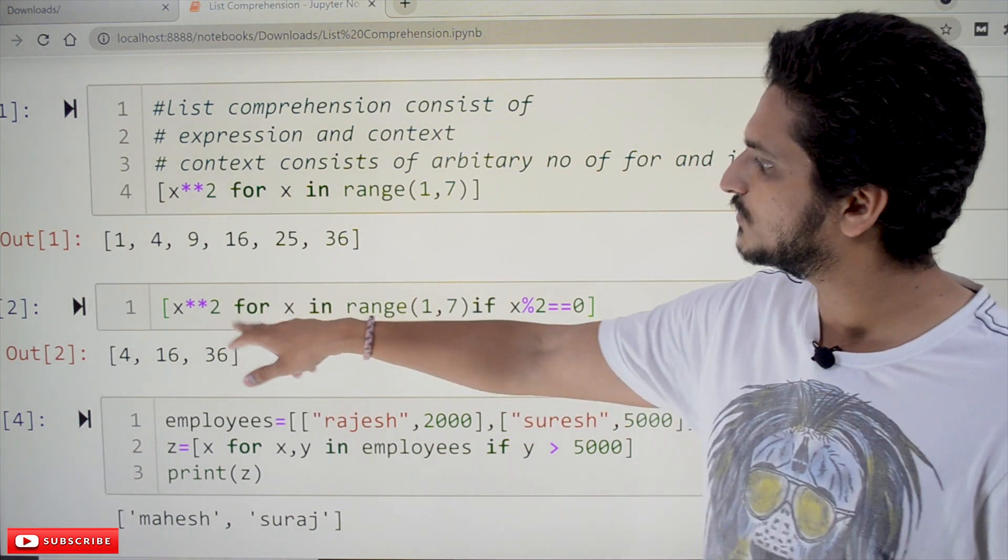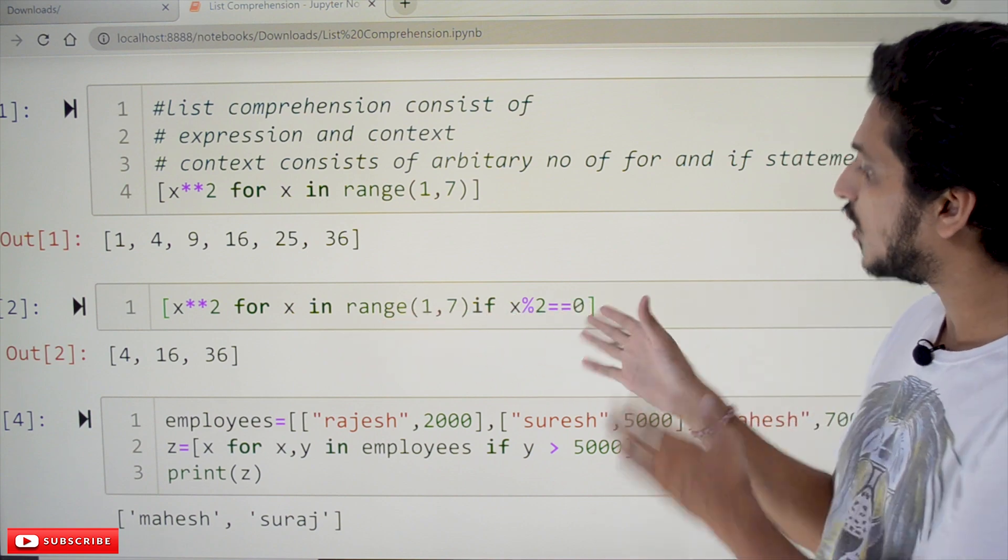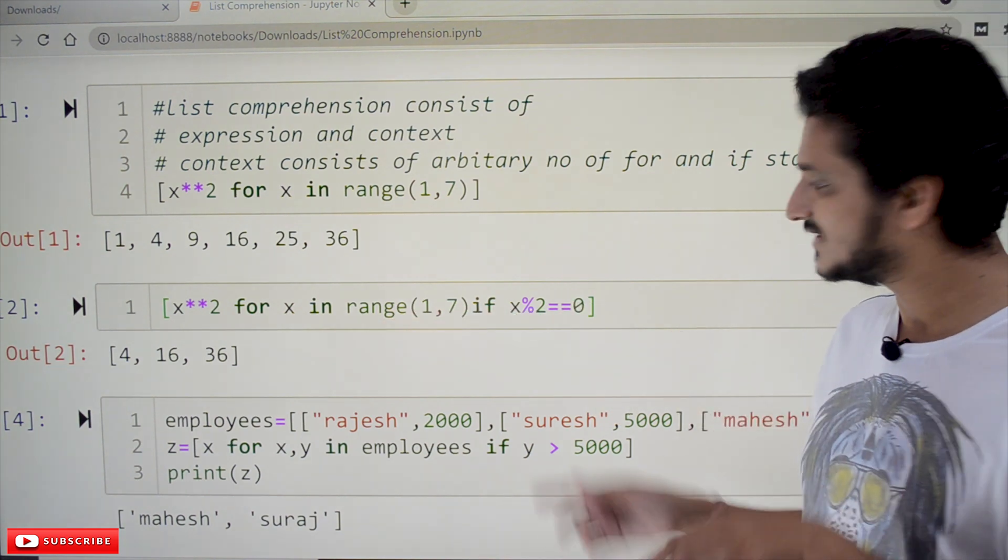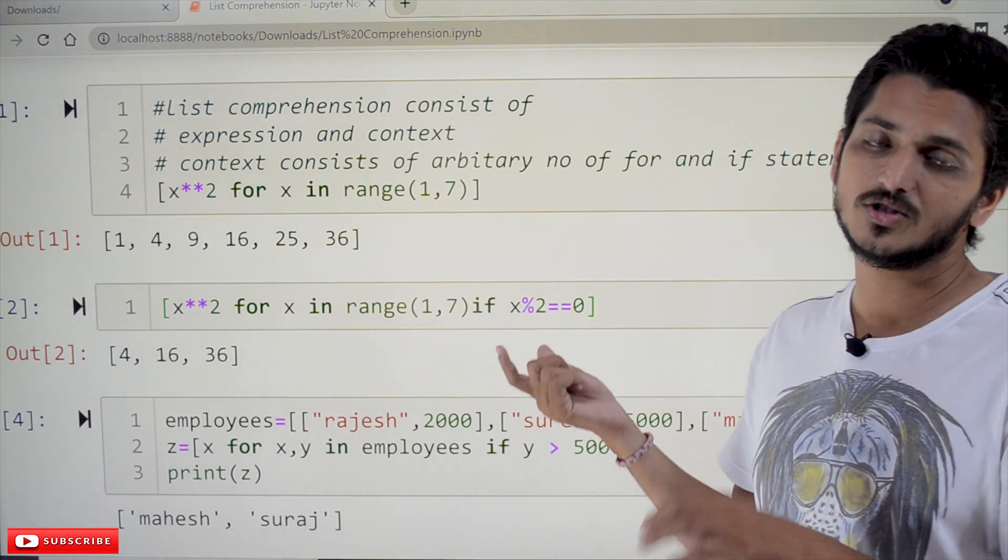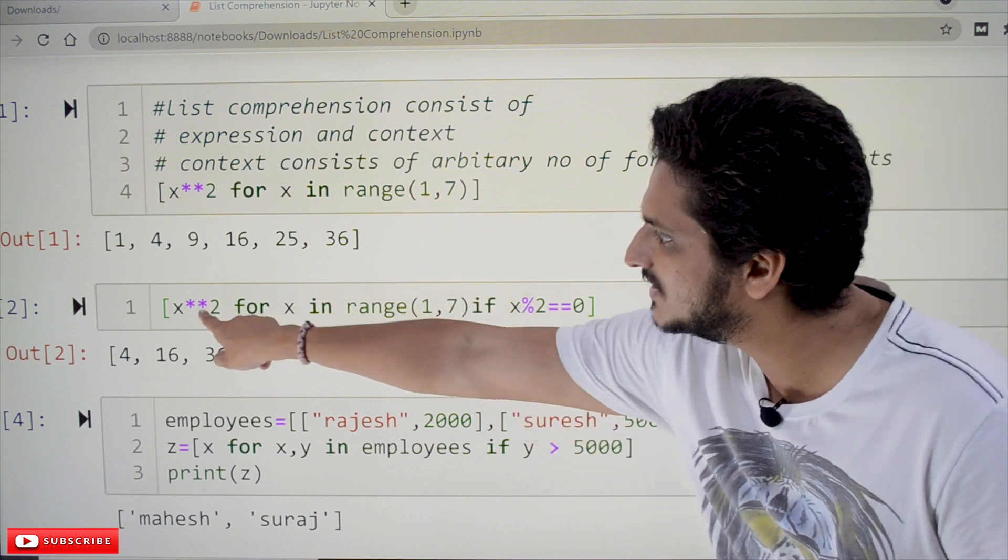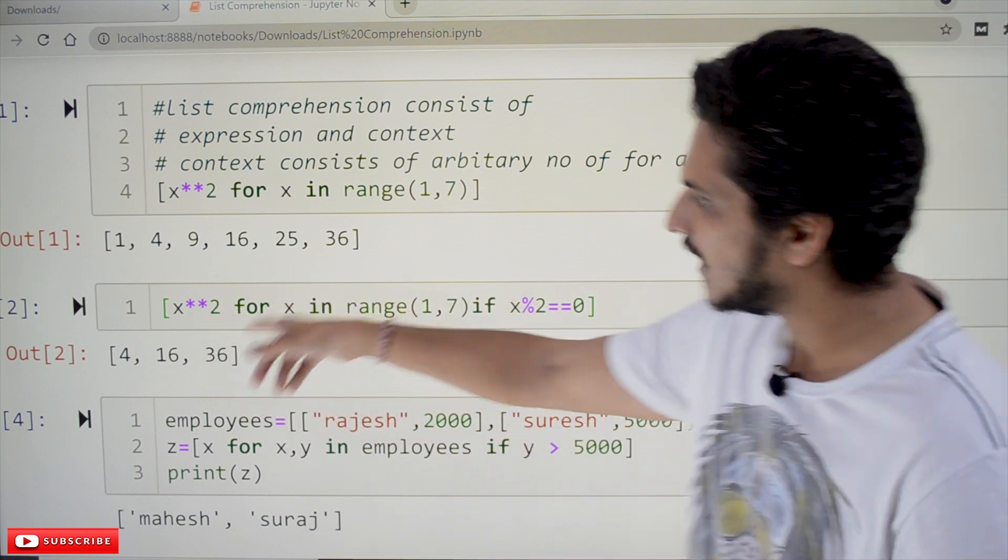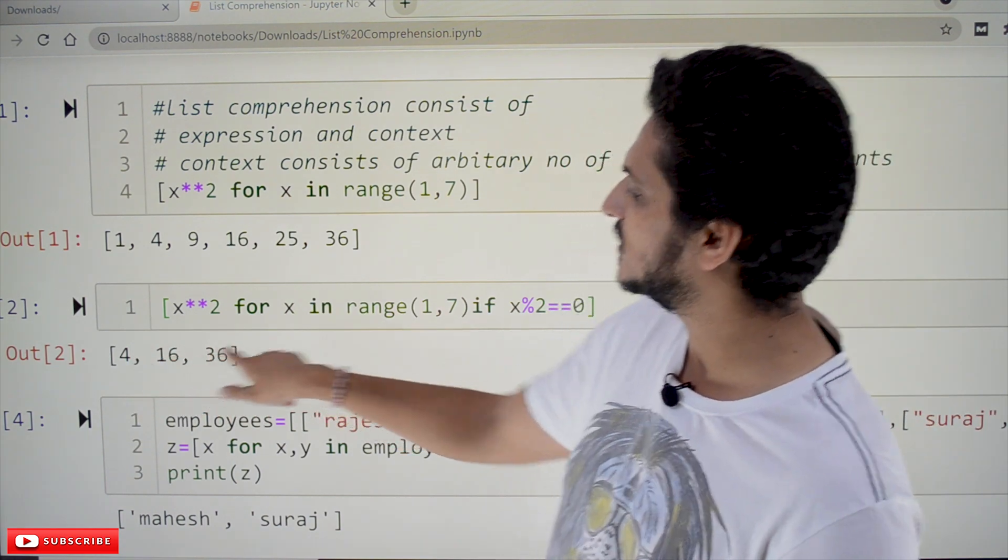Now, coming to the second example: x**2 for x in range(1,7) if x mod 2 == 0. We have mentioned a condition x mod 2 equal to 0 means consider only the even numbers. If this condition applies then only this expression will be evaluated x**2. So, it is providing powers only for even numbers 4, 16 and 36.